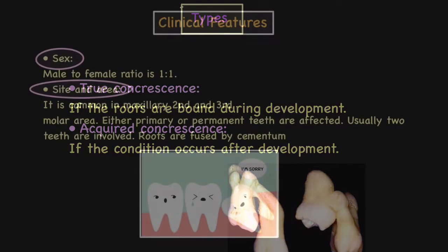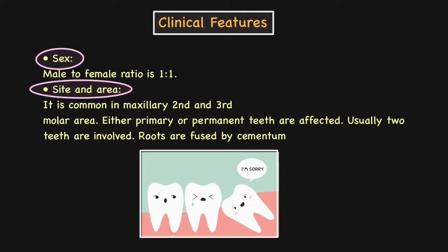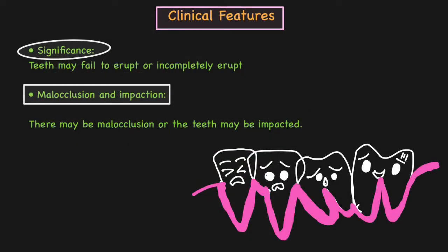Moving on to the clinical features of concrescence. It occurs equally in both genders, with a male-to-female ratio of 1:1. Regarding site, it is more common in the maxillary second and third molar region, primarily because of distal inclination and the higher chances of impacted wisdom teeth. Either primary or permanent dentition may be affected, and there is fusion of the roots of the teeth by means of cementum.